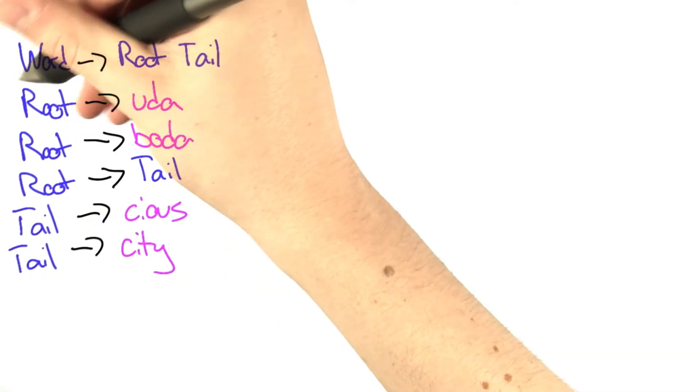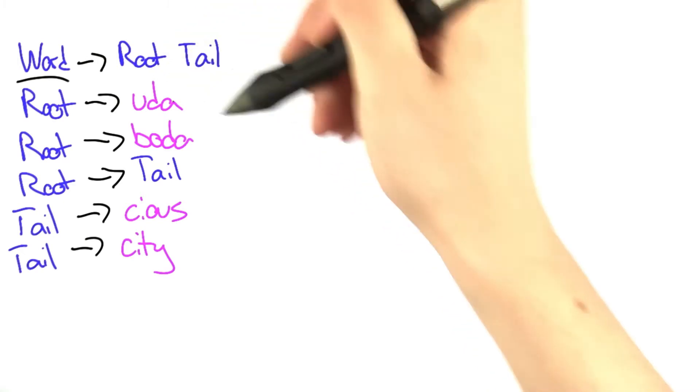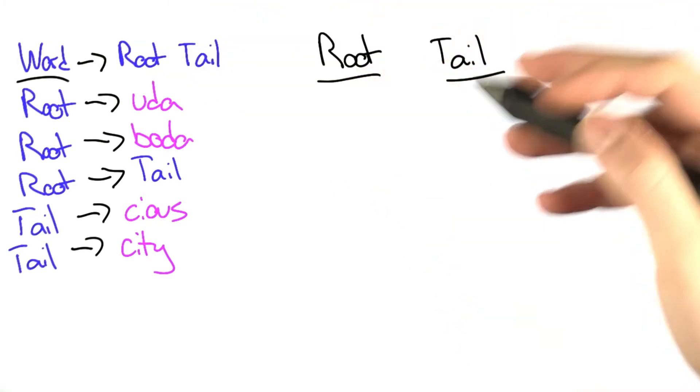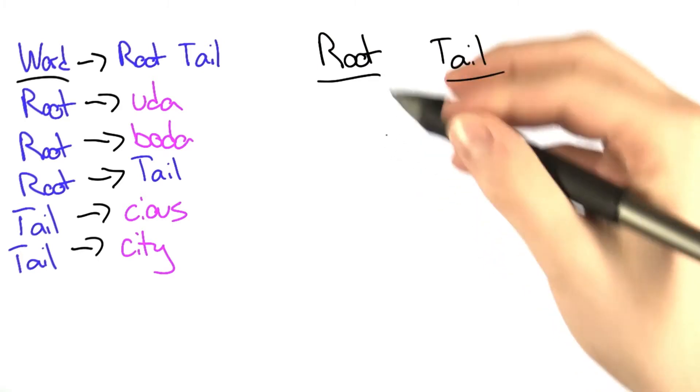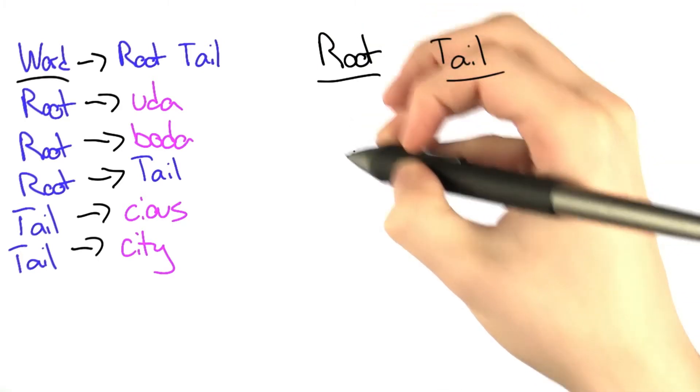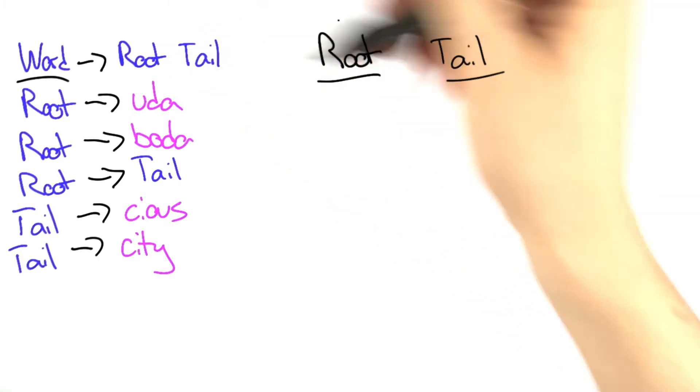In this grammar, we can see that every word begins with a root and then a tail. So what we're going to do to see how many strings this generates is go through every possible root there can be and then every tail there can be.